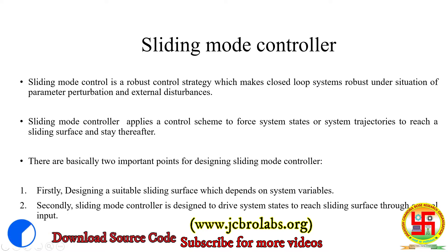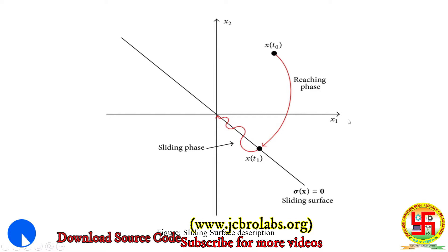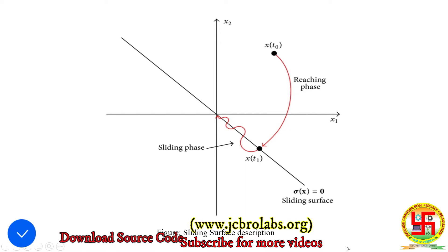I would like to explain this sliding mode control strategy with a diagram. Here x2 is a system state, x1 is a system state, and the line represents the sliding surface, which is a combination of both system states. The entire sliding mode controller technique is divided into two phases: the reaching phase and the sliding phase.